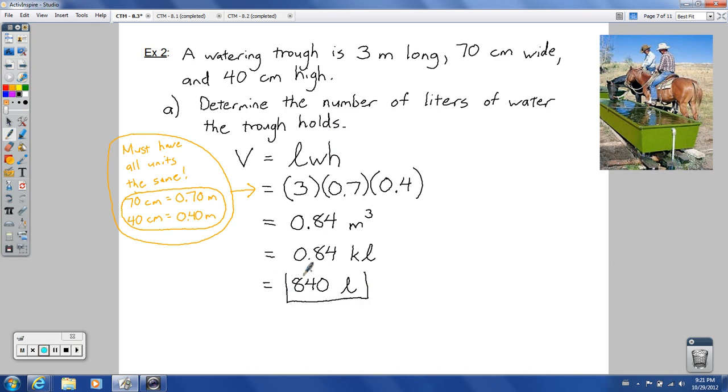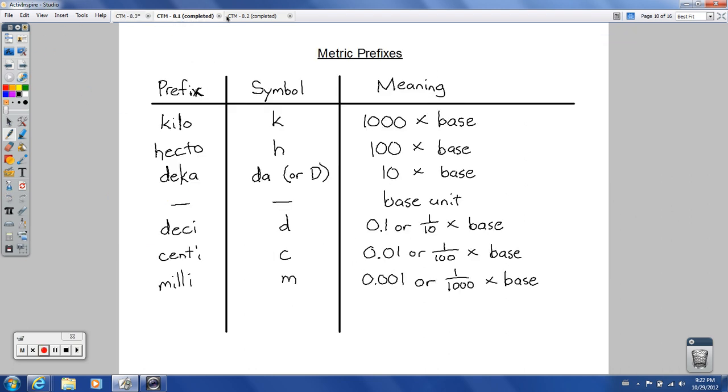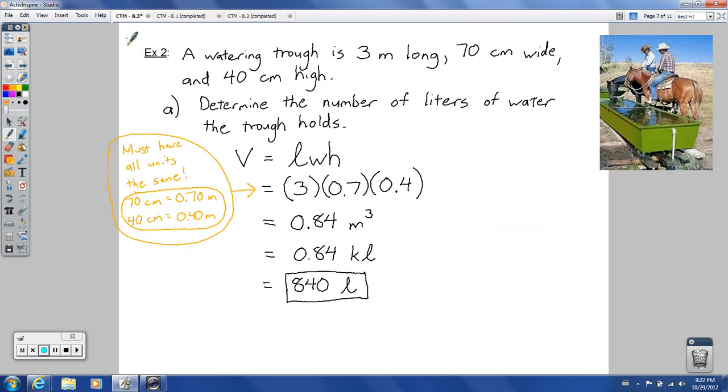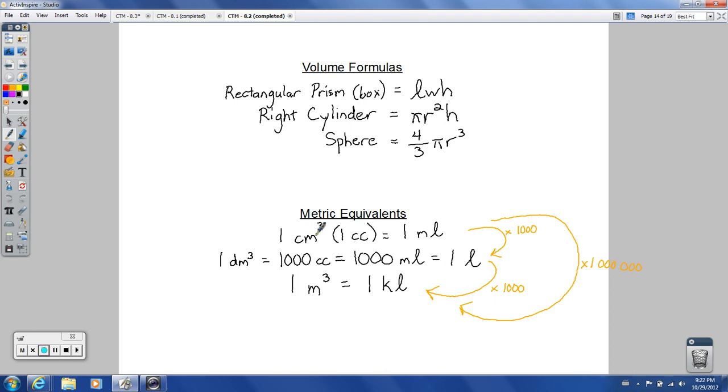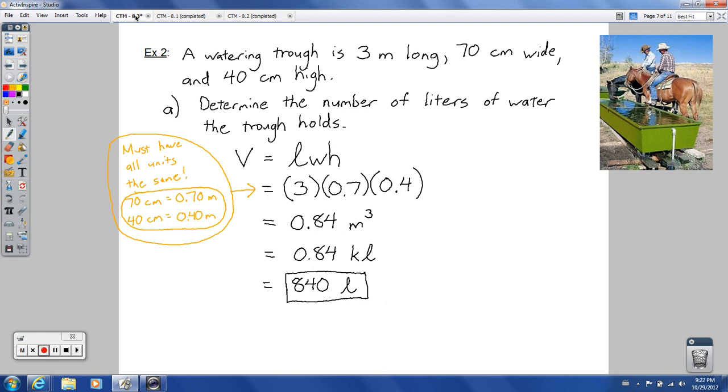So could I have done centimeters cubed and then gone the other way with a decimal? Sure. I could have done centimeters cubed and got a number in milliliters. If I would have done that, this would be 300, this would have been 70 and 40. I would have multiplied those all together and gotten 840,000 milliliters, move the decimal three spots the other way to get 840 liters. So you could have done it that way, too. Both ways work.